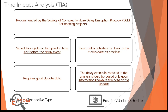TIA is recognized as a robust methodology for determining the impact of delays on both project timelines and costs. One of the main reasons TIA is so effective is because it allows us to analyze potential delays prospectively — before they actually occur. This forward-looking approach is similar to Impacted As Planned, but with a crucial difference: TIA relies on the most recent schedule updates, giving us a more accurate and timely analysis.